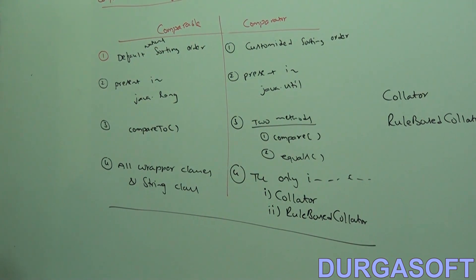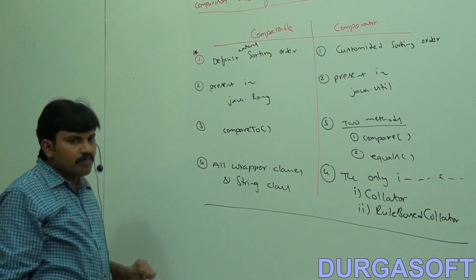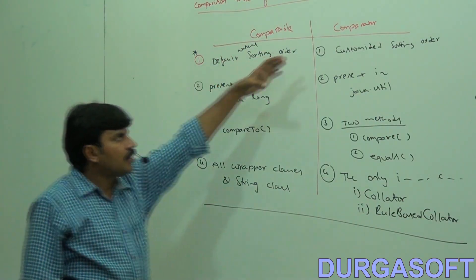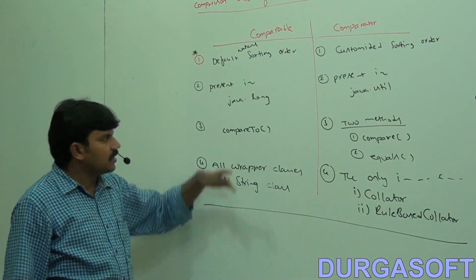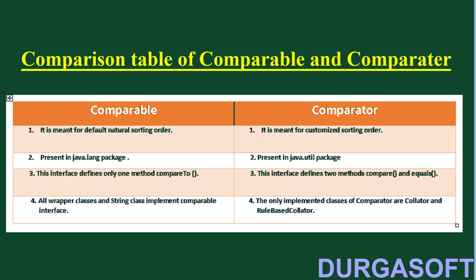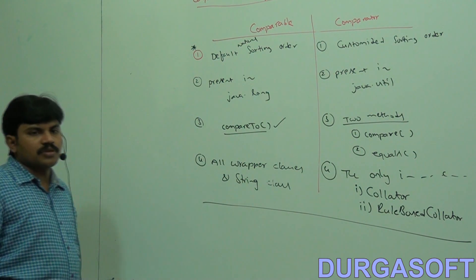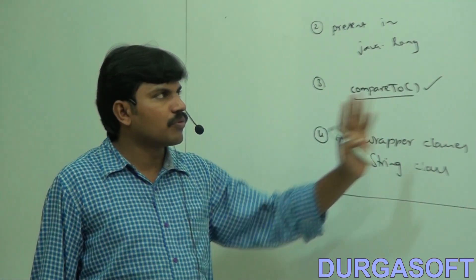If anyone in an interview asks what is the difference between Comparable and Comparator, the most important difference you must state first is: Comparable is meant for default natural sorting order, and Comparator is meant for customized sorting order. If the interviewer is expecting more points, you can then talk about the package, method count, and implementing classes. That's all — this covers what is the difference between Comparable and Comparator, and when to use each one.